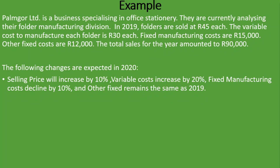We are also told that the following changes are expected in 2020: selling price will increase by 10%, variable costs increase by 20%, fixed manufacturing costs decline by 10%, and other fixed costs remain the same as 2019.